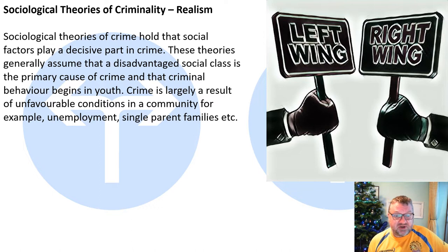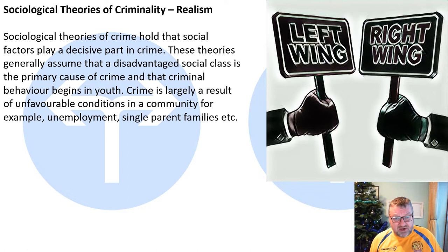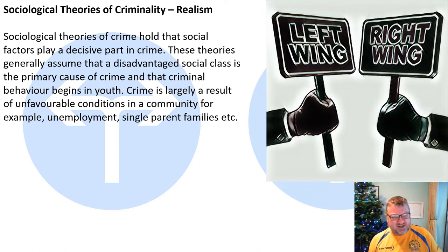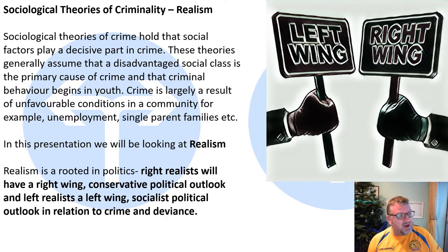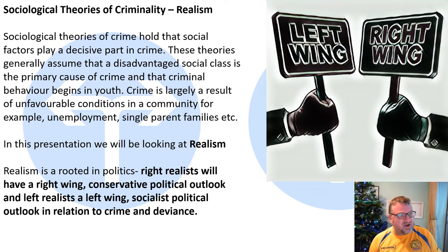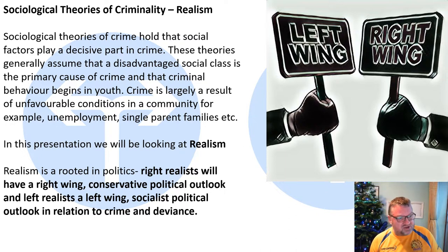Sociological theories of crime argue that social factors play a part in crime, generally assuming that social class is a mitigating factor, and that the primary causes of crime and criminal behaviour begin in youth, largely as a result of unfavourable conditions such as unemployment, single parent families, etc. Realism is rooted in politics: right realists have a right-wing conservative political outlook, and left realists have a left-wing socialist political outlook in relation to crime and deviance.